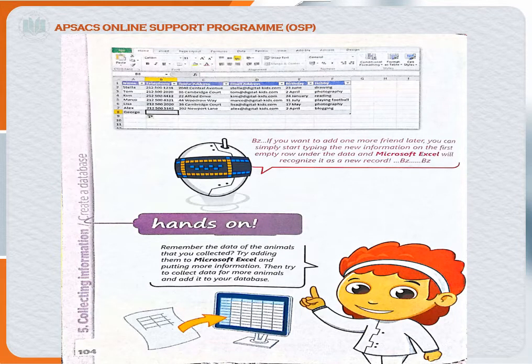In the picture shown, there are seven records of friends. If you want to create a new record, you simply start typing and MS Excel will recognize that you have a new record. You can add one more friend by simply starting to type the new information on the first empty row under the data, and Microsoft Excel will automatically recognize it as a new record.